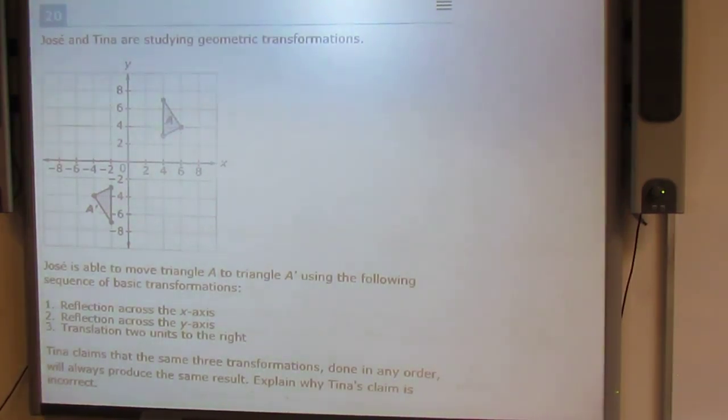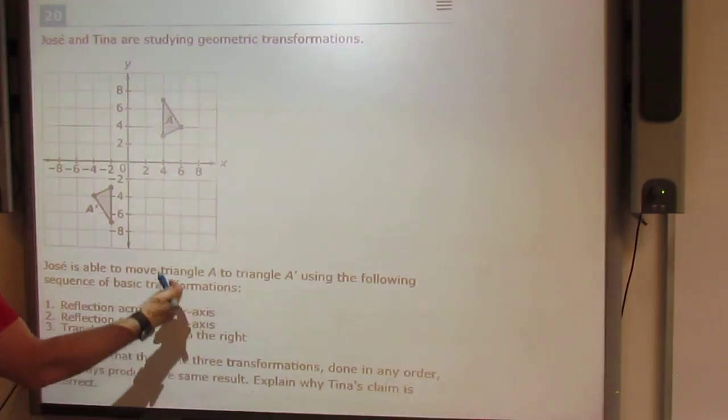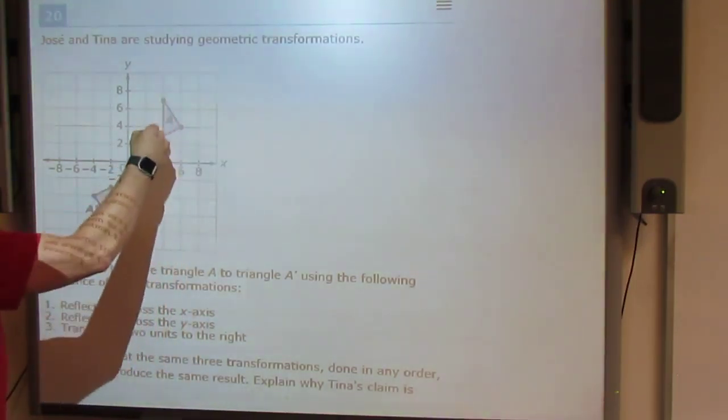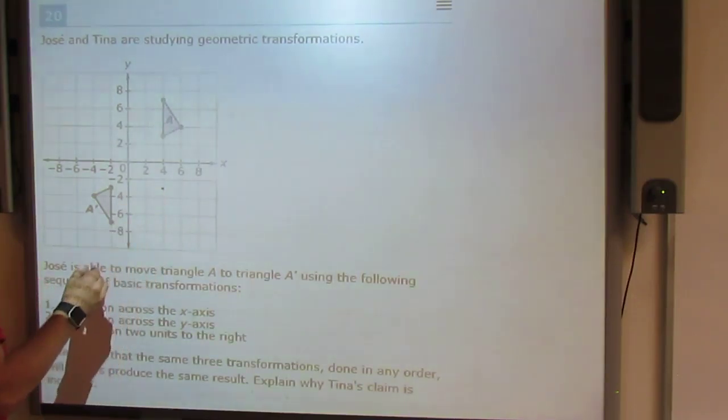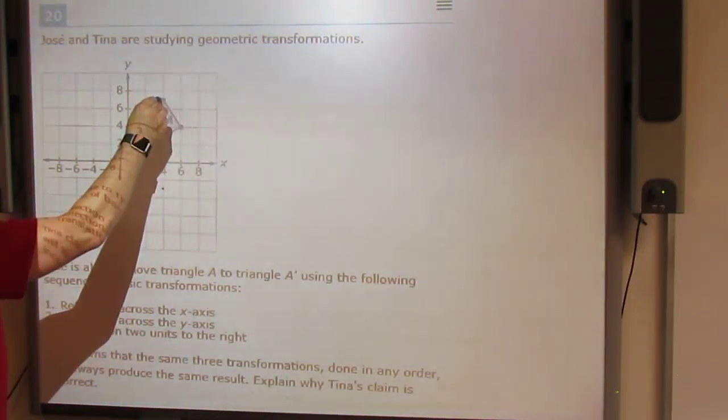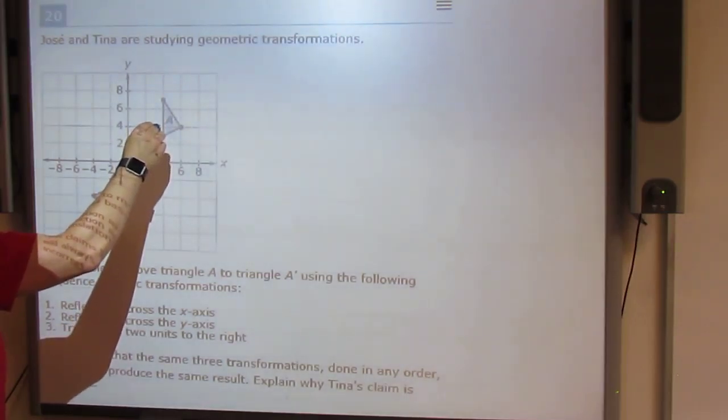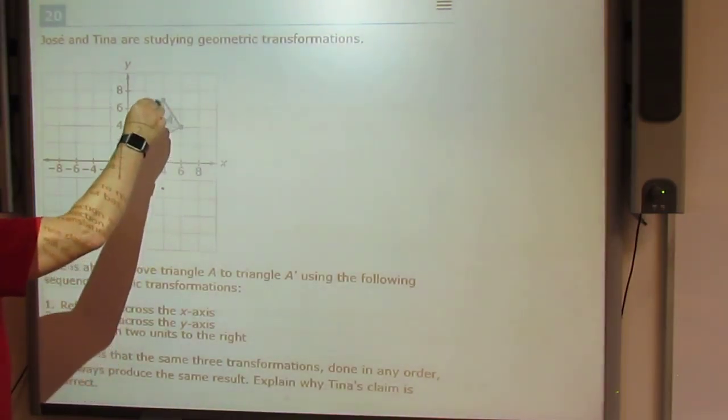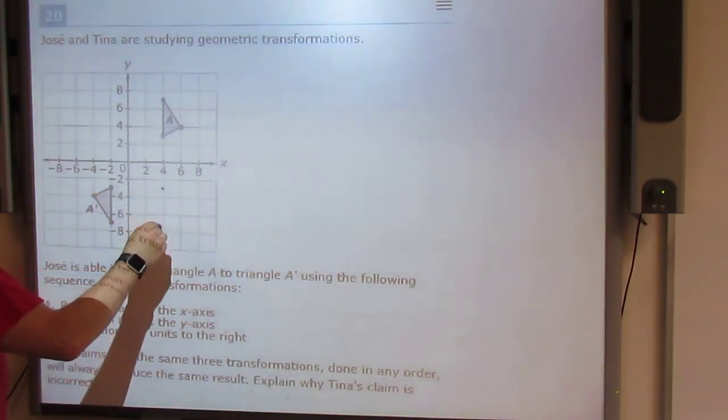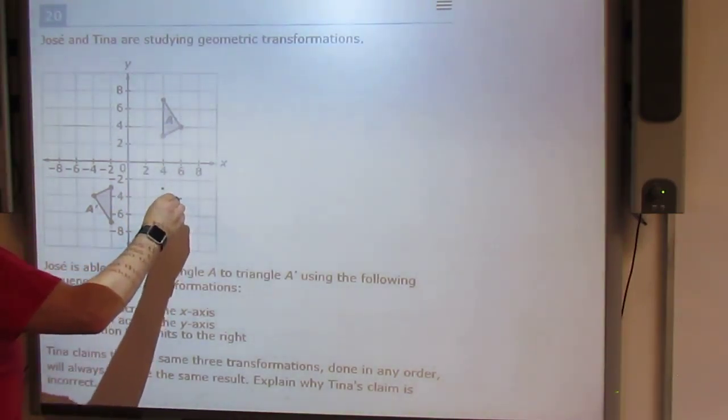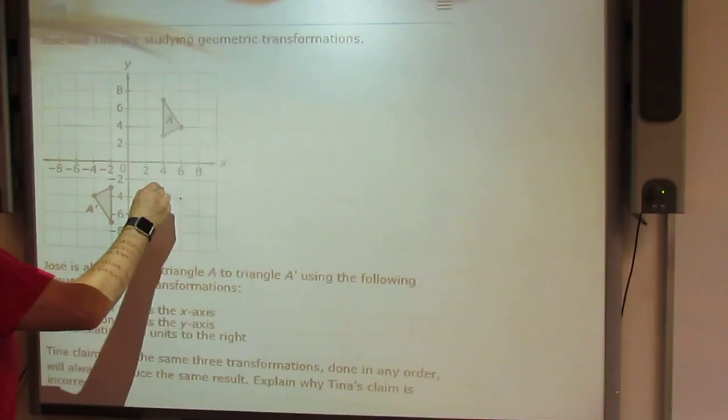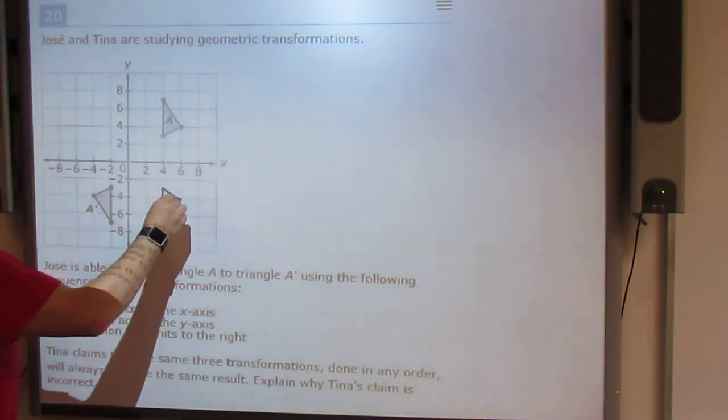If we follow the reflection across the x-axis, then where that would put this is right here. This one would be one, two, three and a half. So one, two, three and a half. This one would be two, one, two. Okay, and so this would be your reflection.